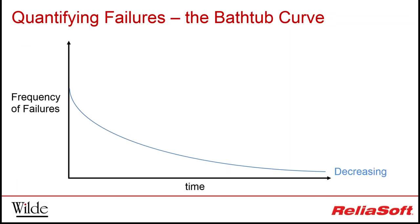A decreasing failure rate represents an issue that occurs less as time progresses. This is typical of early life issues that arise from things such as weak design, assembly errors, damaged components, poor joints and connections, and dirt and contamination. A constant failure rate is typical of random failures — an indication of operating stresses, poor maintenance, operator abuse, and accidents. Electronic components quite commonly exhibit a seemingly random but consistent failure rate.